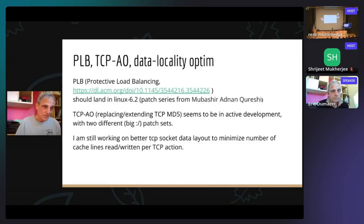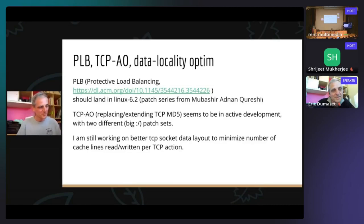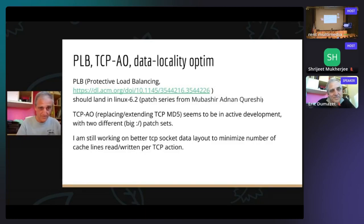TCP AO, which is a kind of MD5 replacement, has seen multiple patch series in the last year. They are quite complex and there are two different teams proposing their own patch sets, so we have to decide which one to take. I would like for these teams to decide themselves rather than asking the maintainers to arbitrate everything. I hope that situation will be resolved.